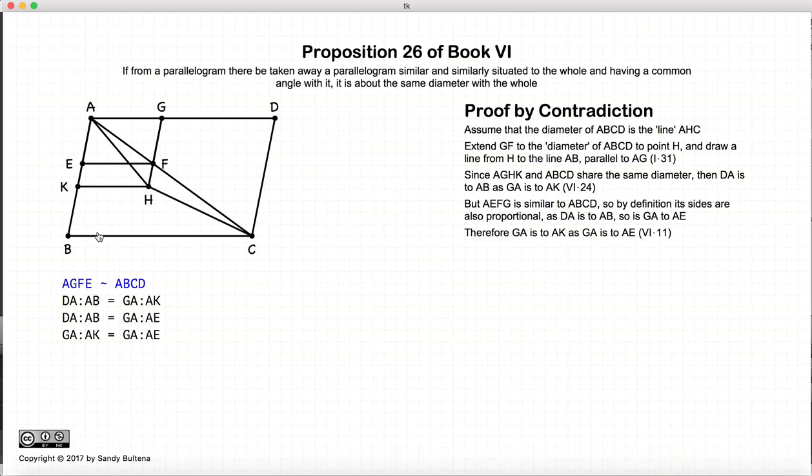Now let's look at these two equalities. We have that GA to AK is equal to DA to AB. But DA to AB is also equal to GA to AE. So in other words, these two ratios are equal. So we have GA to AK is equal to GA to AE.